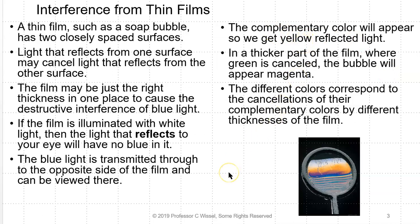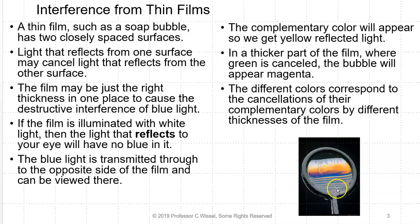In a thicker part of the film where the green is canceled, the bubble will appear magenta — the green is on the other side. The different colors correspond to the cancellation of their complementary colors by different thicknesses of the film. The film is sagging here because it's held vertically and, because it's liquid, it sags down and gets thicker at the bottom. That's reflected by all these different bands of colors.